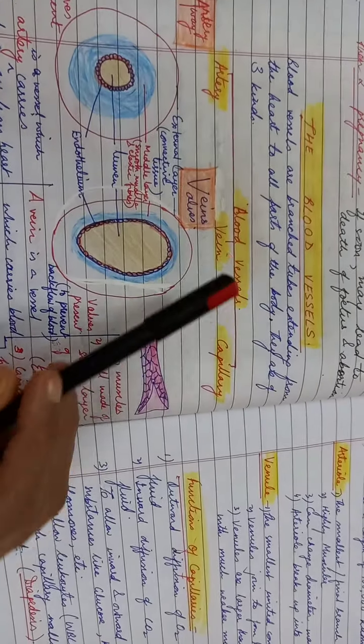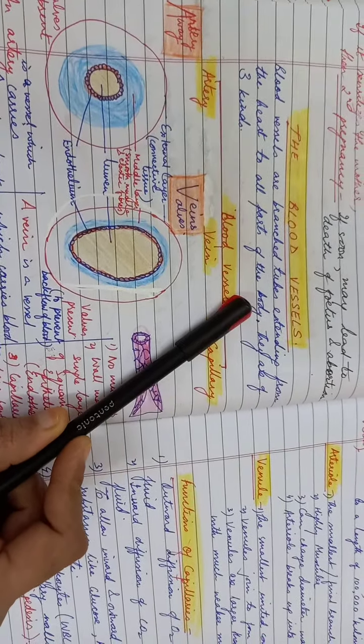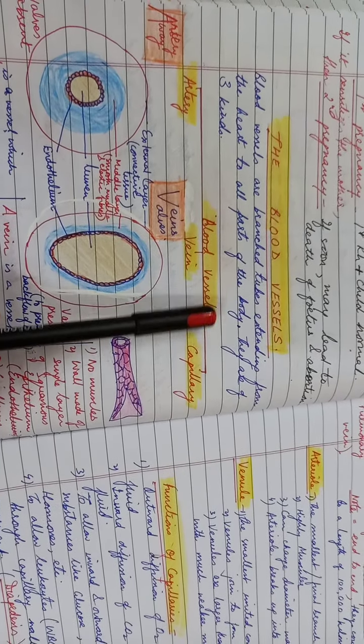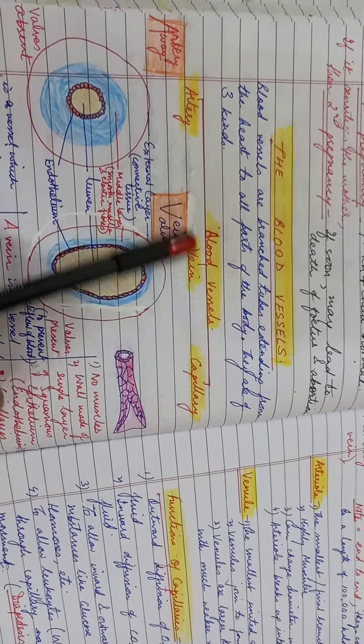Today's topic to begin is blood vessels. So what are blood vessels? Blood vessels are branched tubes extending from the heart to all parts of the body. They are of three types: artery, vein, and capillary.